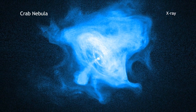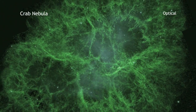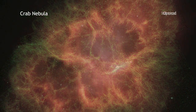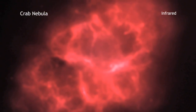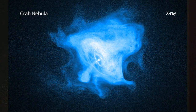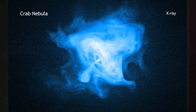Looking at the Crab in other wavelengths, such as optical light from Hubble, seen here in green, and Spitzer's infrared view in red, we see a much different picture. The size of the X-ray image is smaller than the others, because X-ray emitting electrons radiate away their energy faster than the lower energy electrons that emit optical and infrared light.